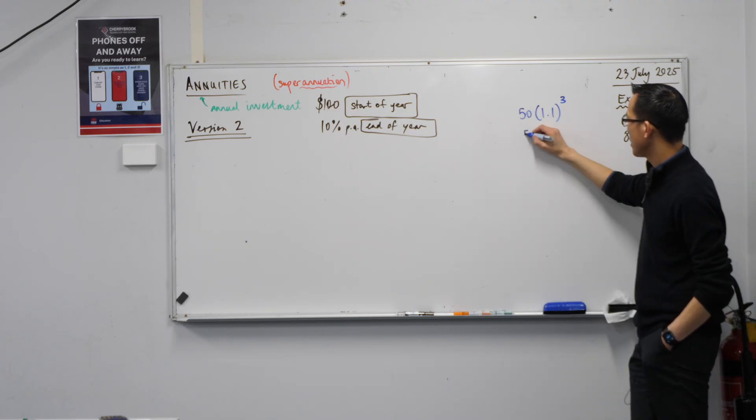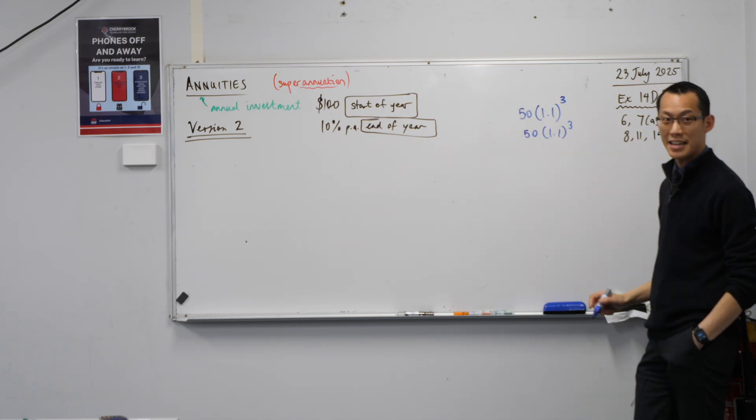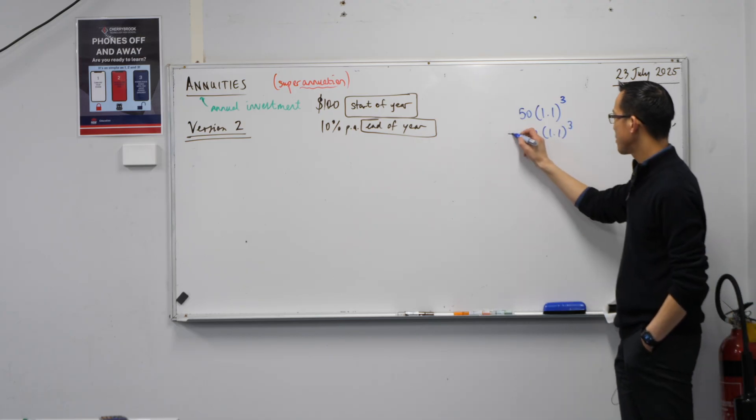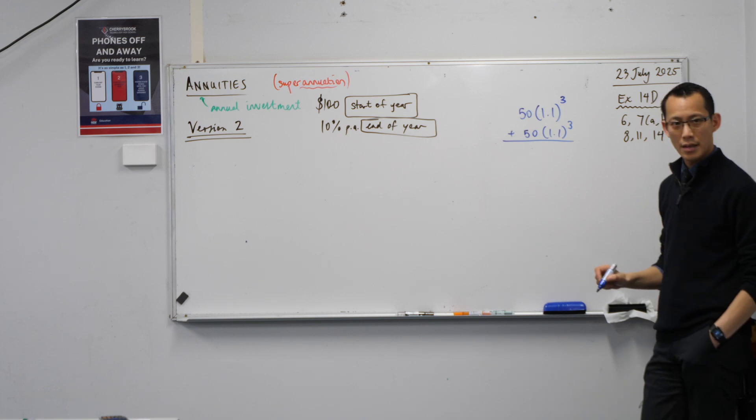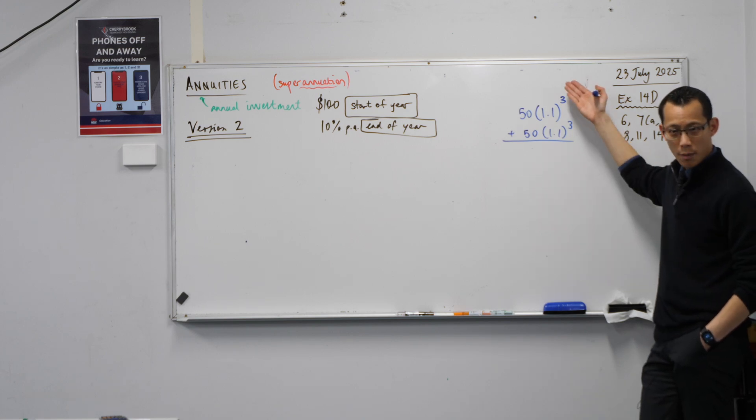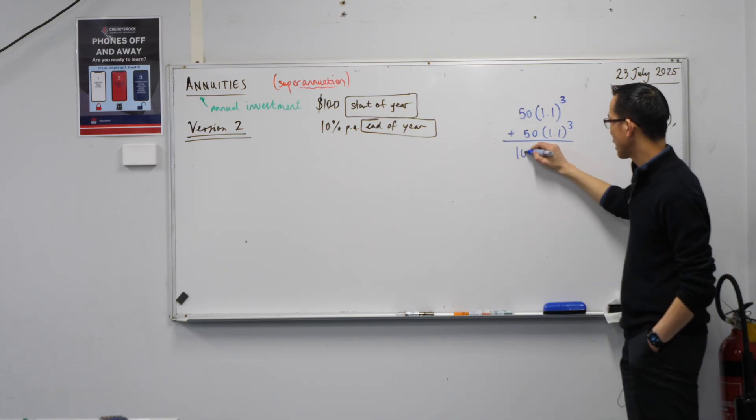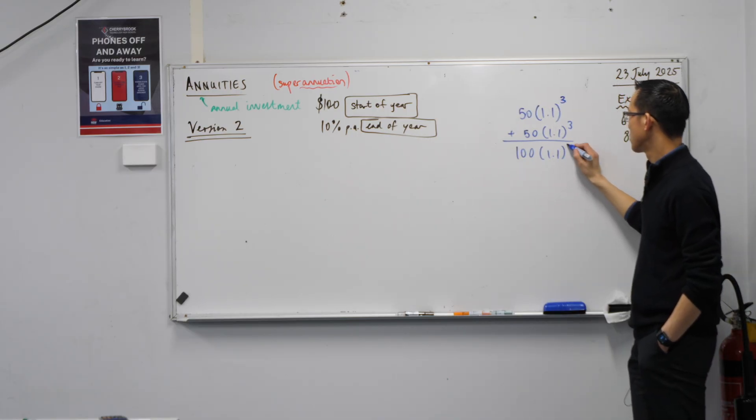And then here is the other one, which surprise, surprise, is identical, right? What happens when you add them? Well, I've got common factors, the interest calculation is a common factor, right? So what you get is this. Do you agree?